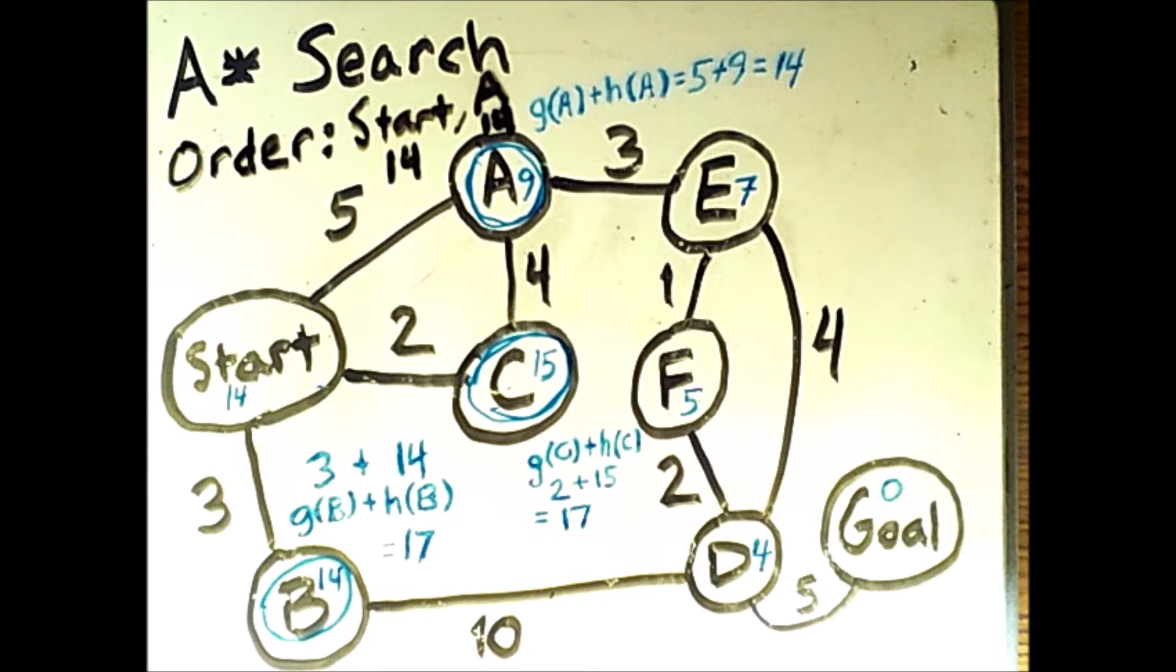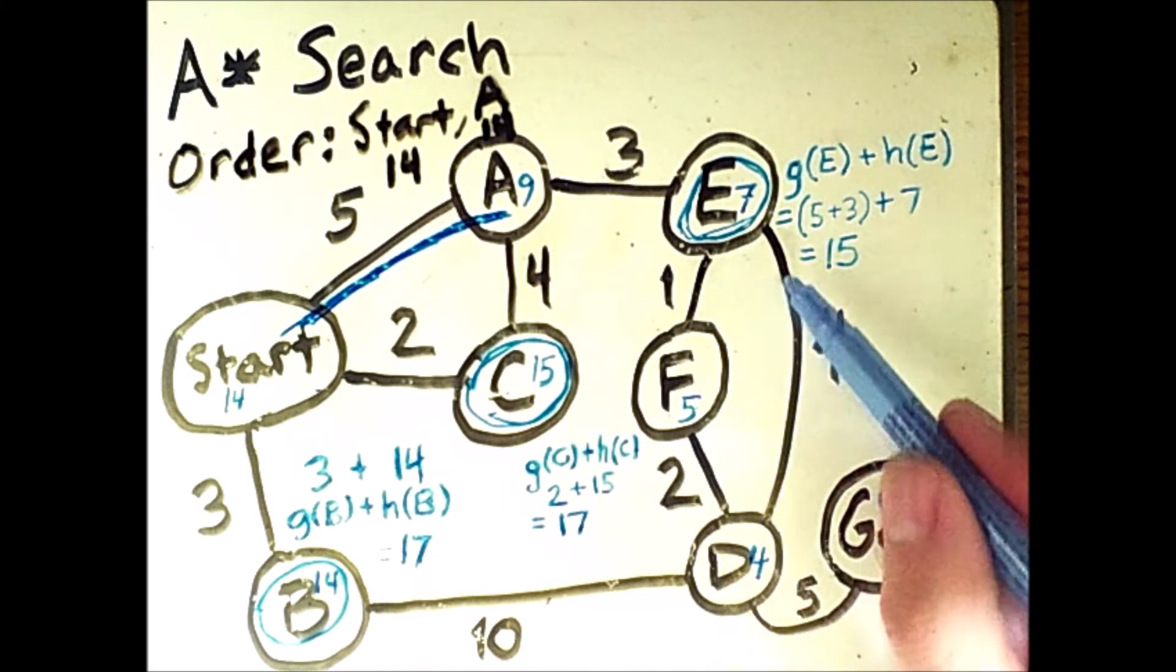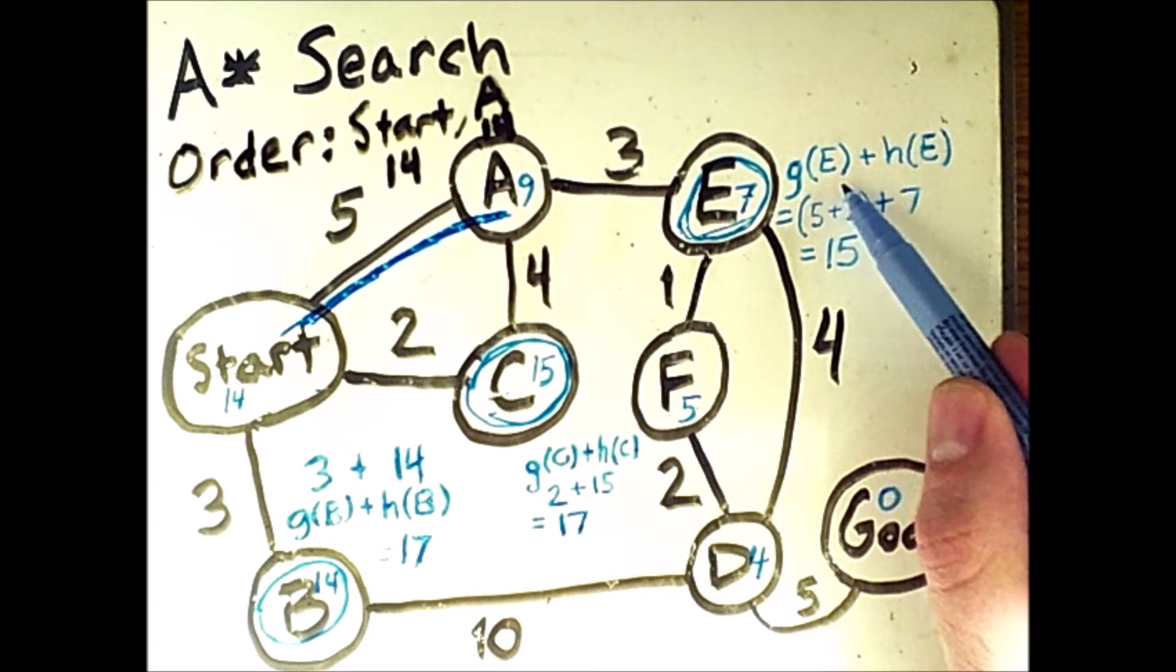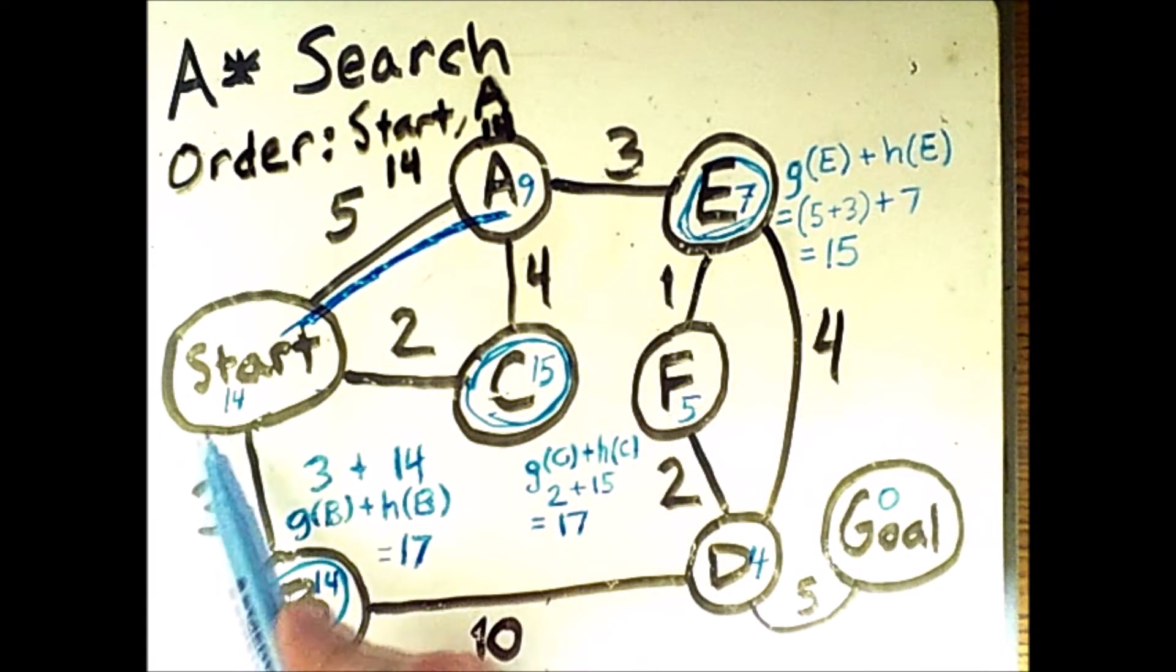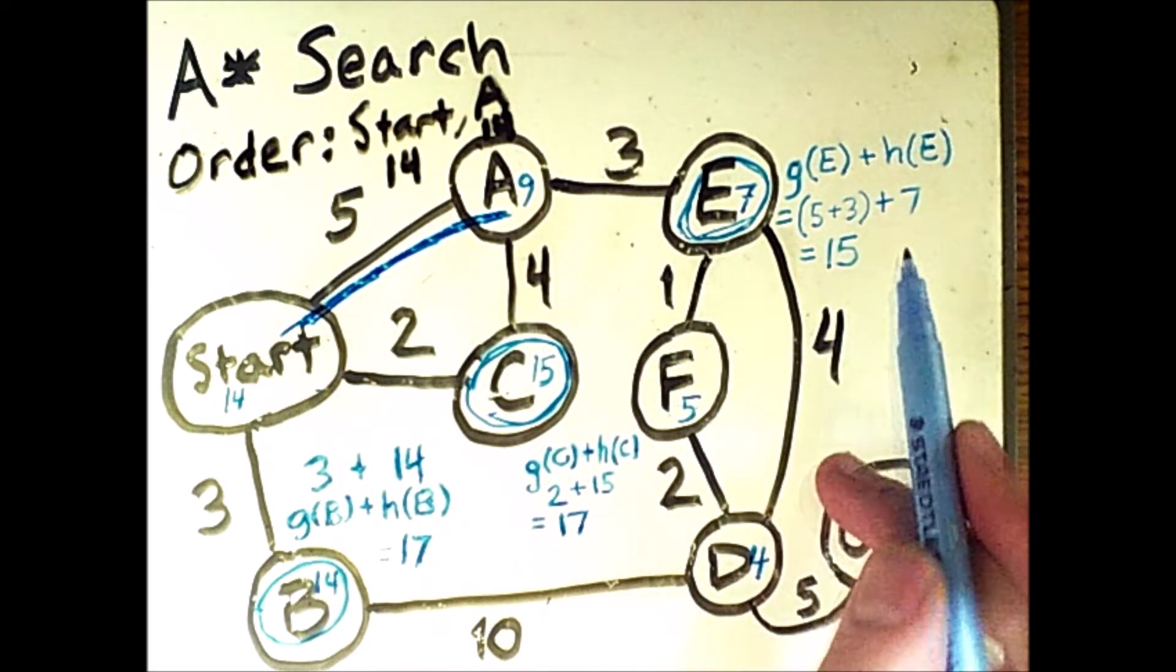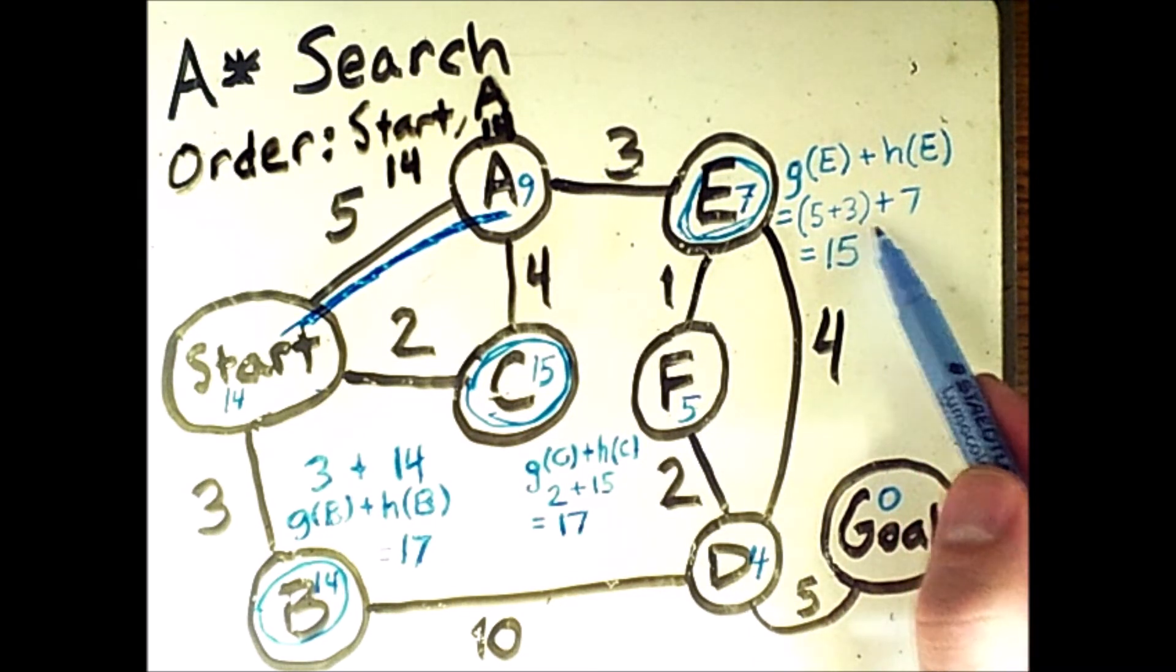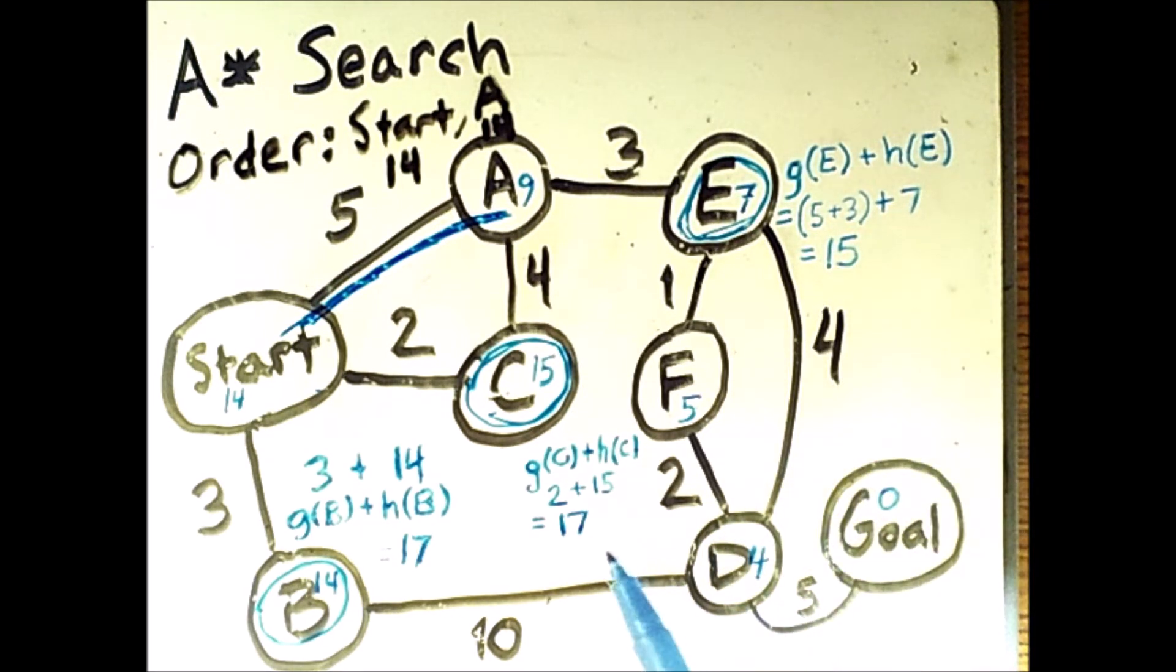Moving on from there, we have to remove a from the fringe and then add its neighbor e to the fringe. So the search has gone from start to a and we see that e is on the fringe. So we need to know what its priority value is. Well, g of e is 5 plus 3. Remember, it's the cost to get to e from the start. And because we discovered e via a, that is the route we take. So the overall cost or priority value for e is 5 plus 3 plus the heuristic value of 7 to get 15. 15 is less than 17 and 17, so e will be the next thing we visit.